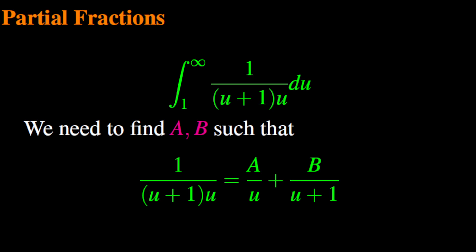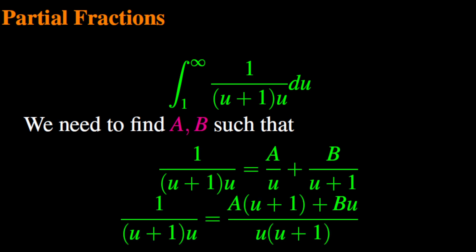Our goal is to find the values of a and b such that the fraction 1 over u times u plus 1 is equal to the sum of two fractions, a over u and b over u plus 1. The first thing we should do is reduce the sum of partial fractions to the same denominator. So, a over u plus b over u plus 1 equals the new fraction with numerator a times u plus 1 plus b times u, and denominator u times u plus 1.